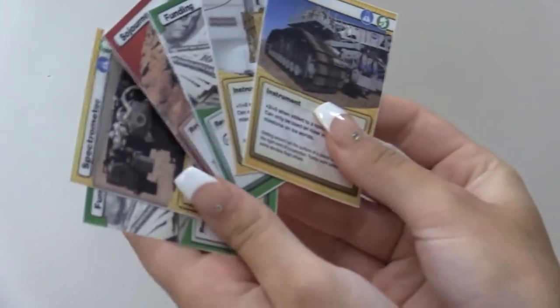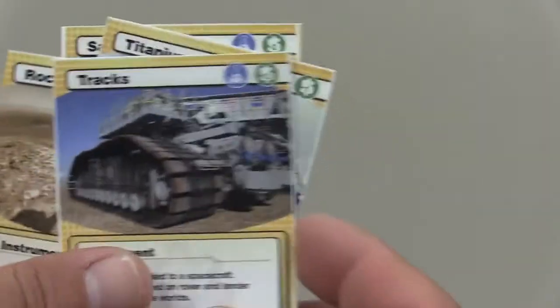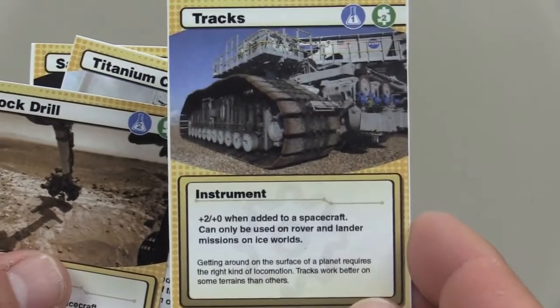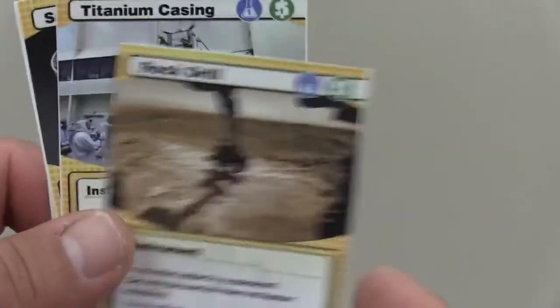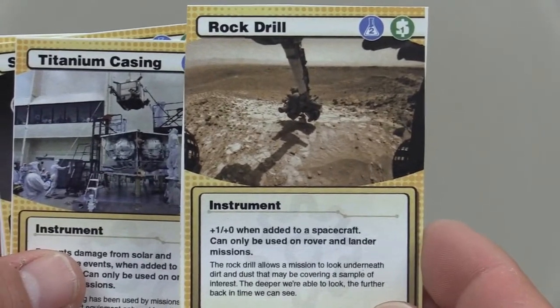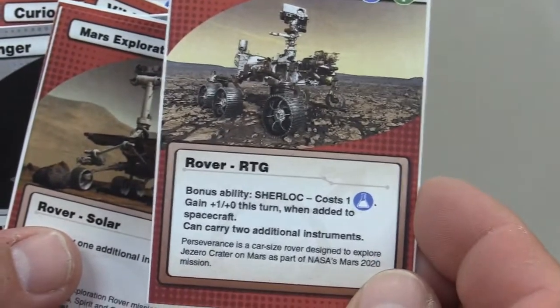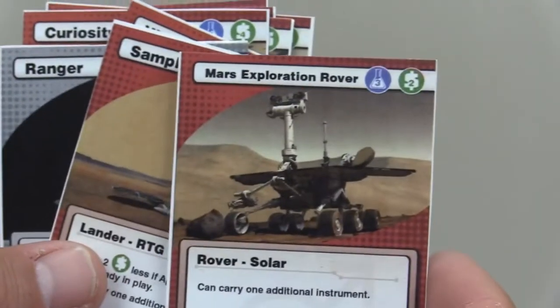Instruments may provide spacecraft with special abilities, resistance to environmental conditions at the destination, improvements in durability, or research bonuses, as indicated on the card. For example, an instrument with a note of plus one or plus zero provides spacecraft with a bonus point in research strength, but no bonus points in durability.